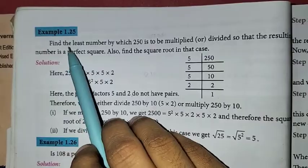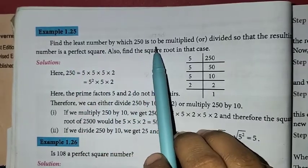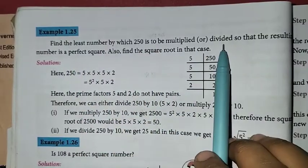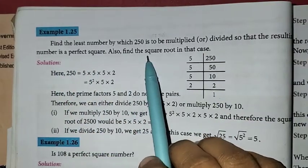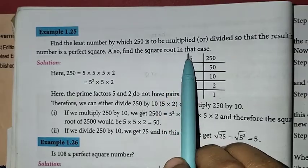In the problem we will be thinking, find the least number by which 250 is to be multiplied or divided so that the resulting number is a perfect square. Also find the square root in that case.